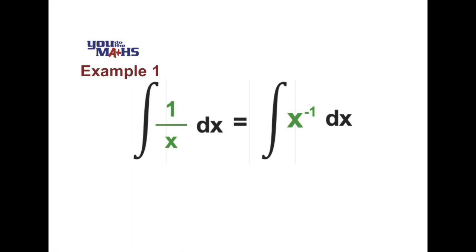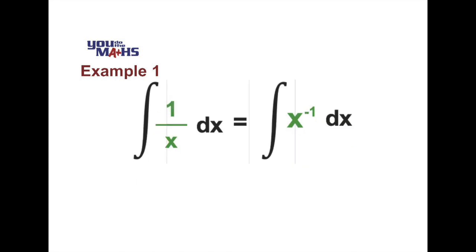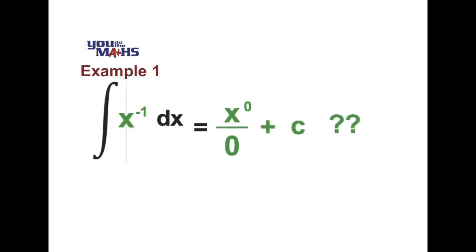And that is, if we have any expression such as a polynomial x to the n, what we do is we raise the power of that function and we divide by the new power. So in this case we'd raise the power by 1 to become x to the 0 and divide by that new power which is 0, of course, plus a constant.